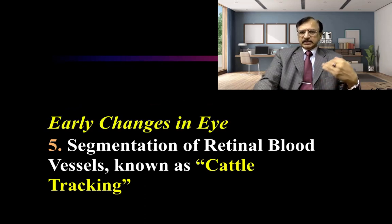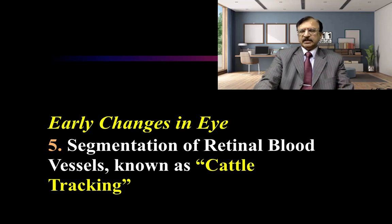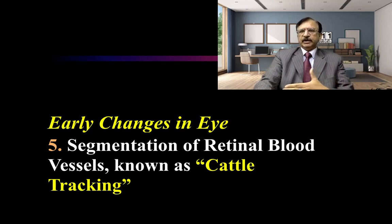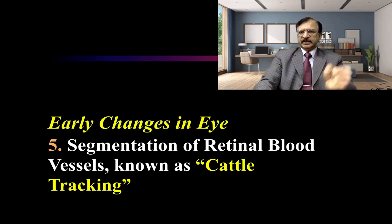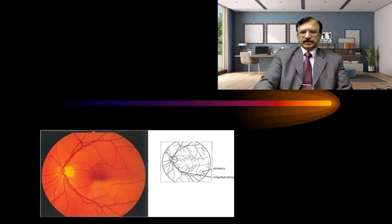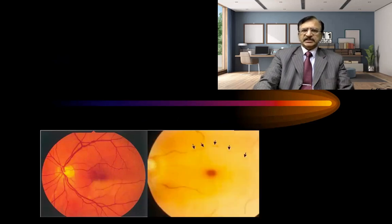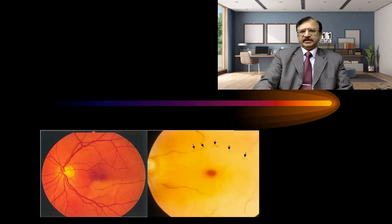Then there is segmentation of the retinal blood vessels. If you perform ophthalmoscopy very near to death, you will see the cattle tracking phenomenon — the stagnation of blood volume where blood is not flowing in the retinal vessels and is segmented, appearing as cattle walking in a single line. On the right side of the picture, arrows show this segmentation of the retinal vessels, which is the cattle tracking phenomenon.